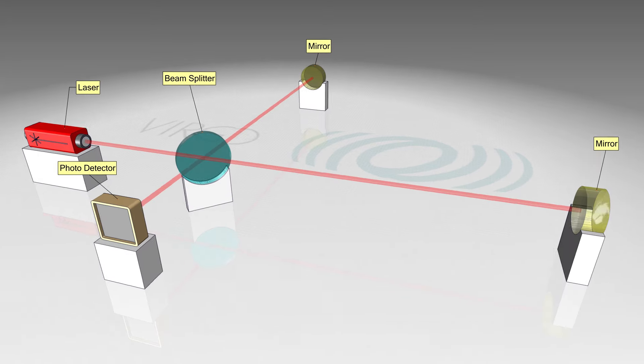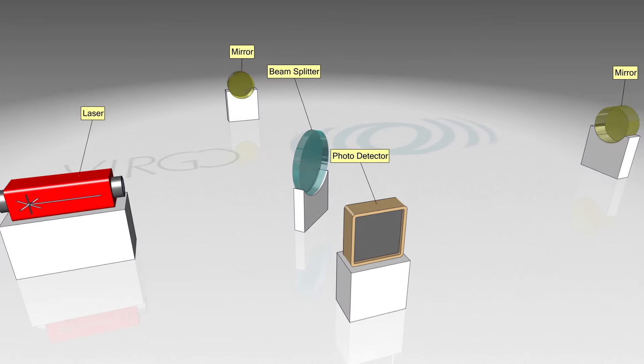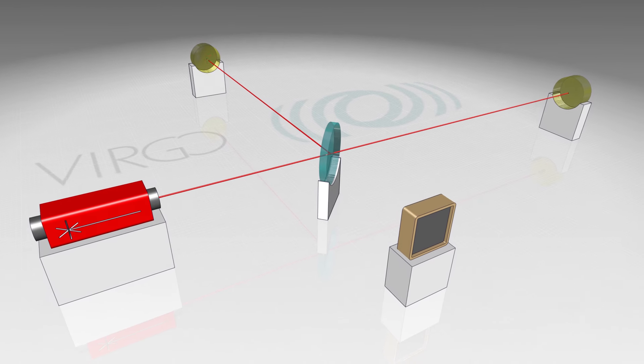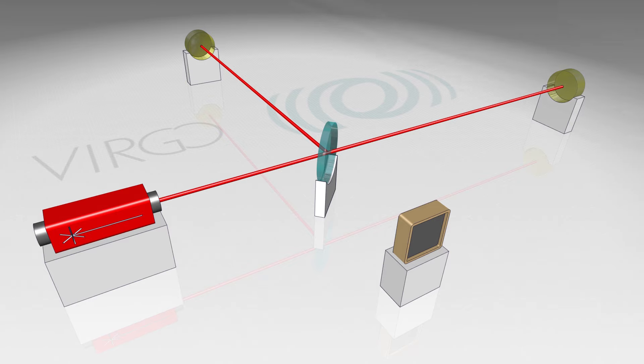If the distance to each mirror is exactly the same, no light will be seen by the detector. The waves of one beam extinguish those of the other beam. This is called interference.